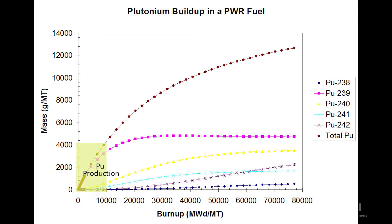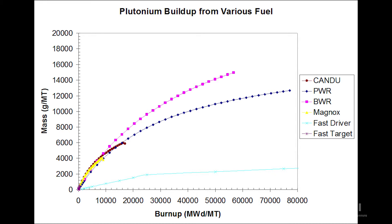If somebody is operating a reactor for the purpose of power, they typically operate the fuel at much higher burn-ups. For power production we expect to see burn-ups on the order of 30, 40, or 50 megawatt-days per ton, whereas for plutonium production, burn-ups would be 10,000 megawatt-days per metric ton or lower. Looking at different reactor types, you see similar curves for concentration of plutonium as a function of burn-up for PWR, BWR, CANDU, Magnox, and others — similar in shape but not exactly the same, with the same general rule applying.